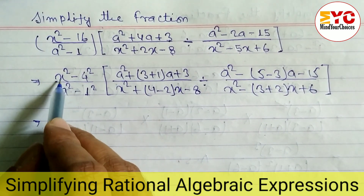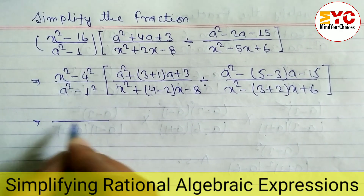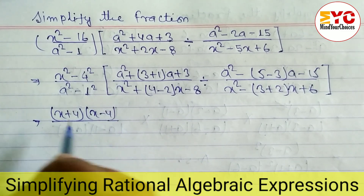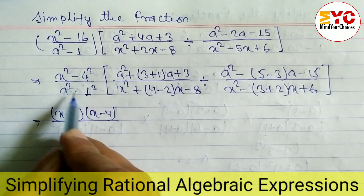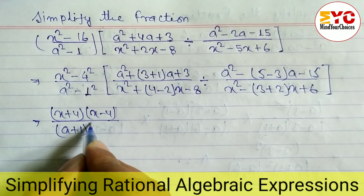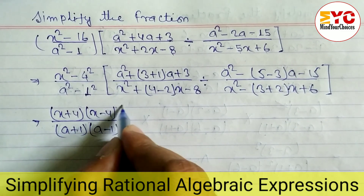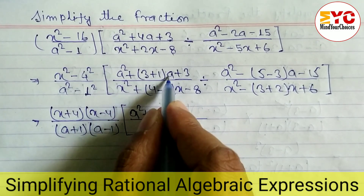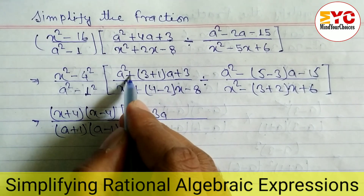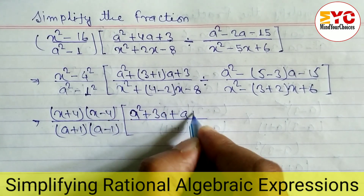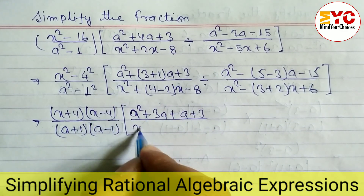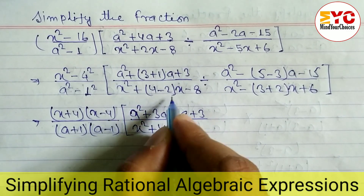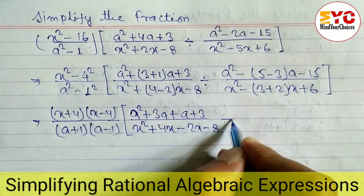Now we open the brackets. We can see this is in the form of a squared minus b squared, so we apply the formula and write x plus 4 times x minus 4. In the denominator, this is also in the form of a squared minus b squared, so we write a plus 1 times a minus 1. Now we open the bracket for the quadratic: a squared plus 3a plus 1 times a, giving a plus 3. In the denominator the same applies.